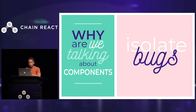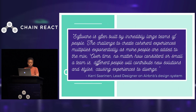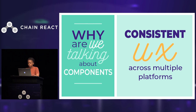There's no more guessing if the component is causing the problem because we're going to be able to isolate those bugs. Your component will need to be very well tested, but we can eliminate the component being the problem — so honestly, that bug is a you problem, not a me problem. There are a lot of component libraries out there already, so why do we want to build our own? It's because of branding. The lead engineer from Airbnb quoted that software is often built by incredibly large teams of people. The challenge to create coherent experiences multiplies exponentially as more people are added to the mix. Over time, no matter how consistent or small your team is, different people will contribute new solutions and styles causing experiences to divert. So the more inconsistent the user experience is, the slower production development becomes. We want to make sure that we create a consistent user experience across multiple apps and multiple platforms.